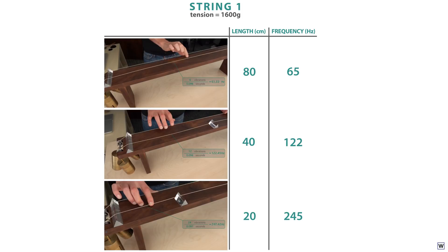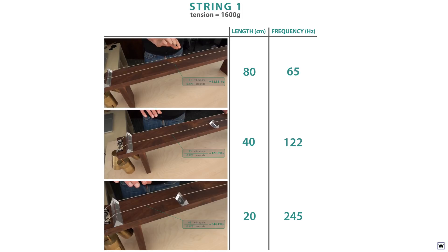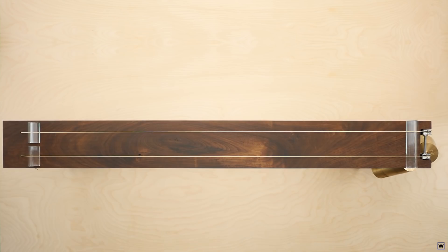As Feynman pointed out, your guess should be specific enough to produce exact predictions. To make things interesting, let's go ahead and set up the experiment we'll use to test our guesses next time. If our guess is any good, it should work for different strings and different tensions.